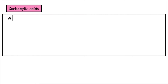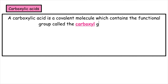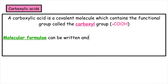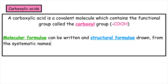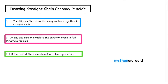A carboxylic acid is a covalent molecule which contains the functional group called the carboxyl group. The molecular formula can be written and structural formula drawn from the systematic names of straight chain carboxylic acids containing no more than eight carbons. In today's lesson we are going to learn how to draw straight chain carboxylic acids.